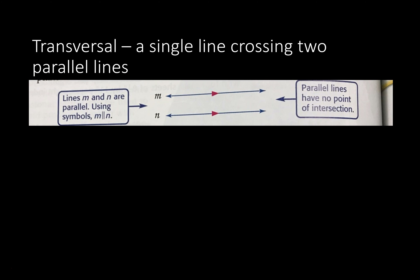A transversal is a single line crossing those parallel lines. This would be the transversal. We're going to examine a bunch of properties with that — we have two parallel lines and a transversal.